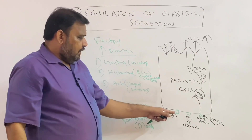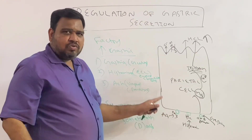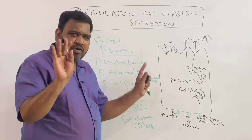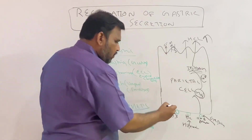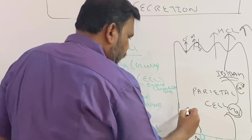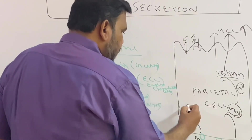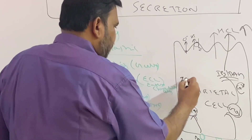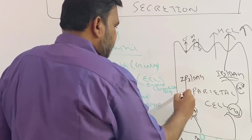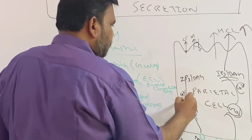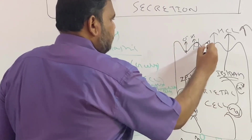Acetylcholine acts on M3 receptors and follows the same pathway as gastrin. It also activates GQ, which triggers the IP3-DAG pathway, causes calcium release, and results in HCl secretion.